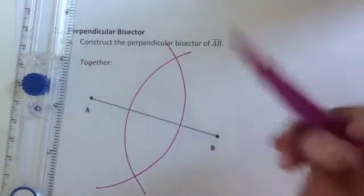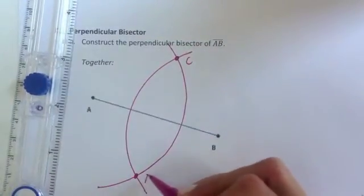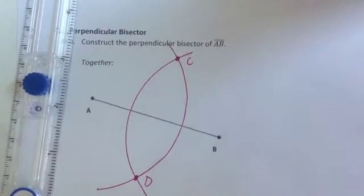Now you can see with these two arcs I've created two intersection points which I'll call C and D. You don't have to label them but it's nice to so that you can refer back to them throughout the construction.